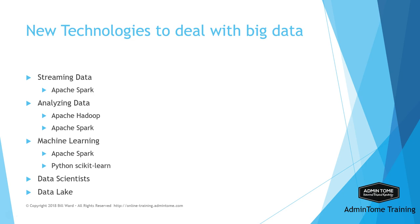Starting with streaming data, there is Apache Spark, which provides an excellent streaming library to handle real-time streaming data. It also has another library for analyzing the data you have collected. Another major player in analyzing big data is Apache Hadoop, which uses the MapReduce algorithm to analyze data in a distributed manner. Machine learning helps us get a deeper understanding of our data by using artificial intelligence algorithms to gain new insights. There is a complete introduction to artificial intelligence later in this course. Apache Spark provides a machine learning library called MLlib that lets you write programs in Python, Scala, or Java. In addition, there is a Python library called scikit-learn that you can use to write programs that make use of machine learning.